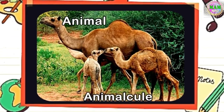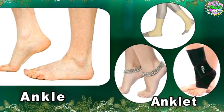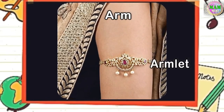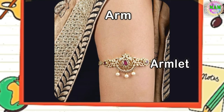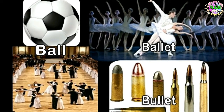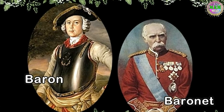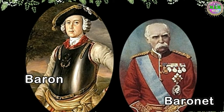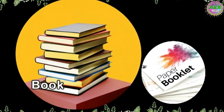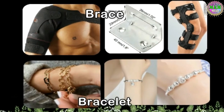Animal → Animalcule. Ankle → Anklet. Arm → Armlet. Ball → Ballet, or Bullet. Baron → Baronet. Bird → Birdie. Book → Booklet. Brace → Bracelet.